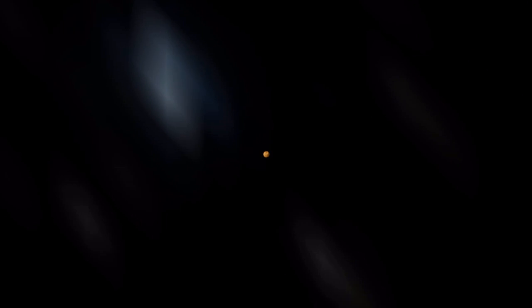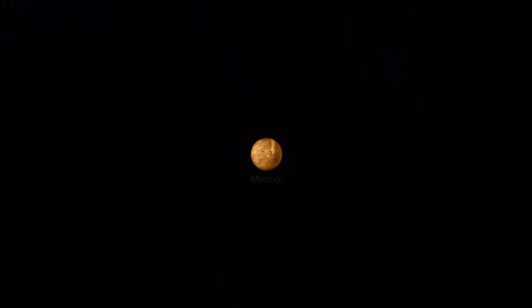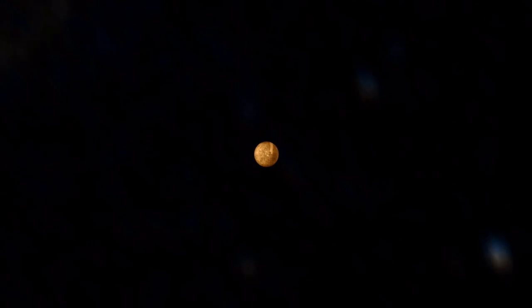In our solar system, Mercury is the closest planet to the sun. Let's go see it. Next after Mercury comes Venus, then Earth, Mars, Jupiter, Saturn, Uranus, and Neptune.